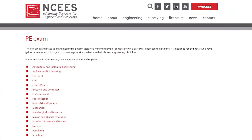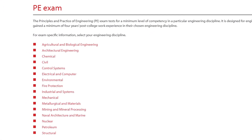There you will see the 16 — yes, 16 — disciplines that the PE exam is offered in: agricultural and biological engineering, architectural engineering, chemical, civil, control systems, electrical and computer, environmental, fire protection, industrial and systems, mechanical, metallurgical and materials, mining and mineral processing, naval architecture and marine, nuclear, petroleum, and structural. Did you even know that there were that many?